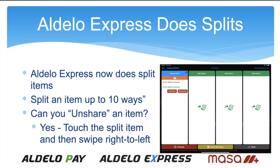One of the systems I know that does shared items — if you split it two ways, it goes half and half, and you put it on the other check. But if you unshare it, it goes back over to the original check and stays at half and half, it just shows two halves. We don't do that — we actually combine it back and make it a whole item. This is a feature you should try and definitely show, because not all tablet systems have this feature.